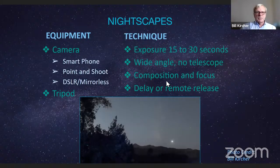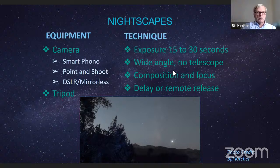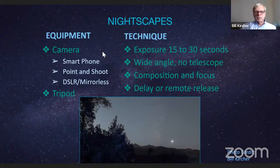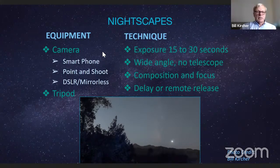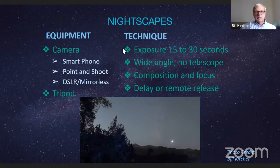Let's go on to Nightscapes. What do you need? You need a camera — you can use a smartphone, a point-and-shoot, or a DSLR mirrorless. You cannot use a dedicated astro-imaging camera because it doesn't have a lens and needs a computer. You should have a tripod to keep it steady, even if your camera has image stabilization. You may also need a minor adapter to attach your smartphone to a tripod. Techniques: you've got to keep the exposure short, 15 to 30 seconds.